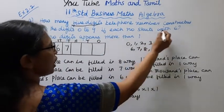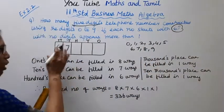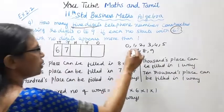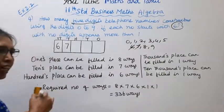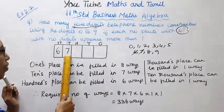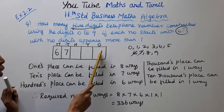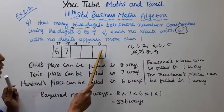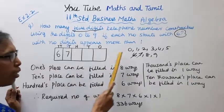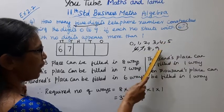Since each number starts with 6, 7, those two positions are fixed. The remaining available digits are: 0, 1, 2, 3, 4, 5, 8, 9 — that is 8 remaining digits to fill the other positions.